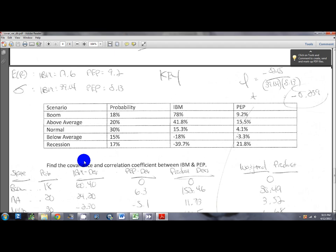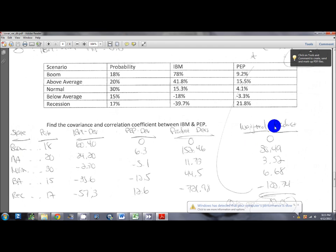The first thing we want to do in terms of covariance and correlation coefficient is always solve for the covariance first, because you need the covariance to find the correlation coefficient. We set this table up in the same way that we did in class, where you have the state, the probability, and then you essentially want to find the deviation from the mean for each state, for each stock. This is going to be the return from that state, so for IBM it's 78%, minus the expected return for that stock, which is 17.6. That is how you got 60.4.